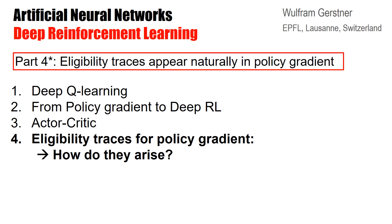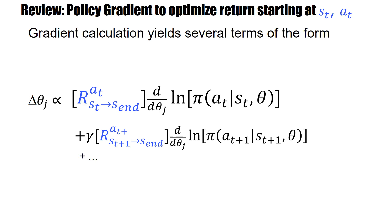Welcome to the lectures on deep reinforcement learning. In this part I will show that eligibility traces appear naturally in policy gradient, and I will show how they arise. Let's just remind ourselves what we have in policy gradient.